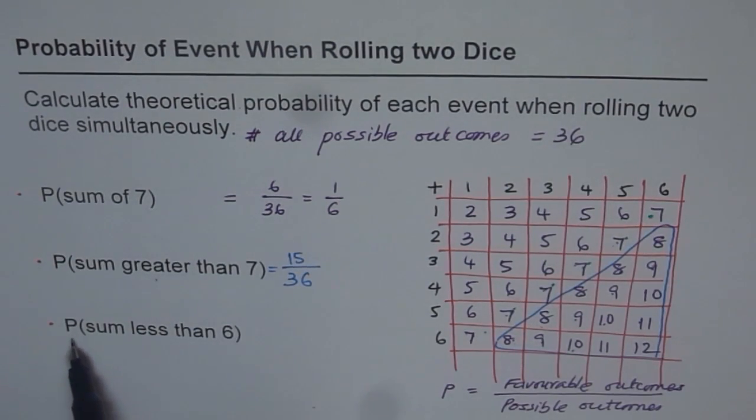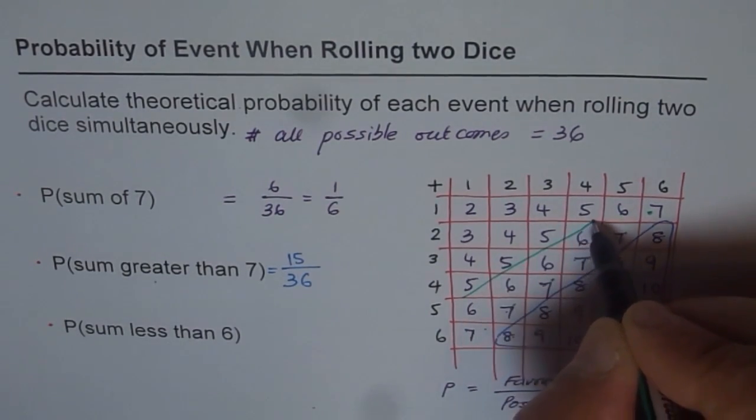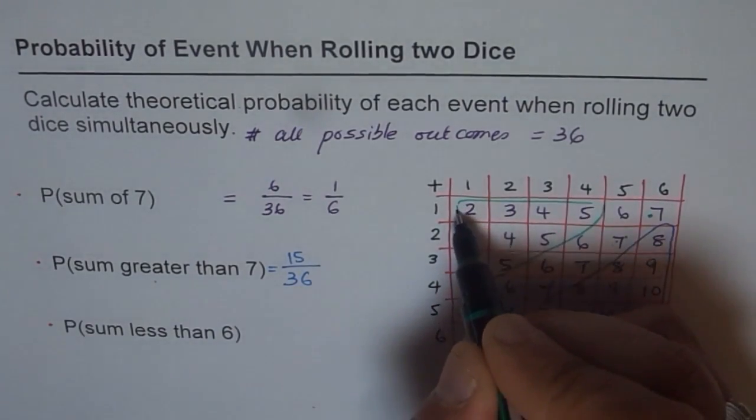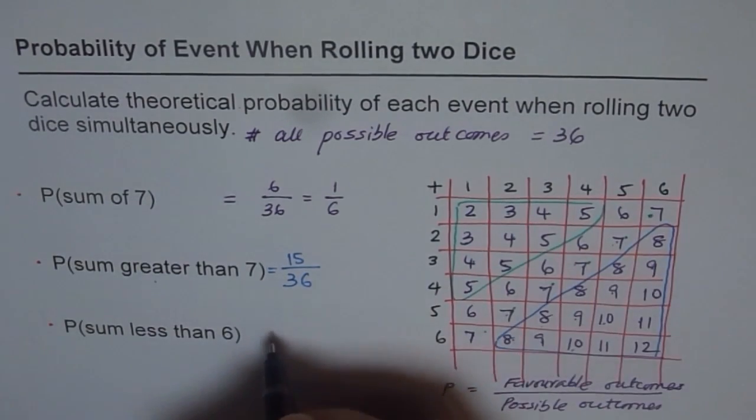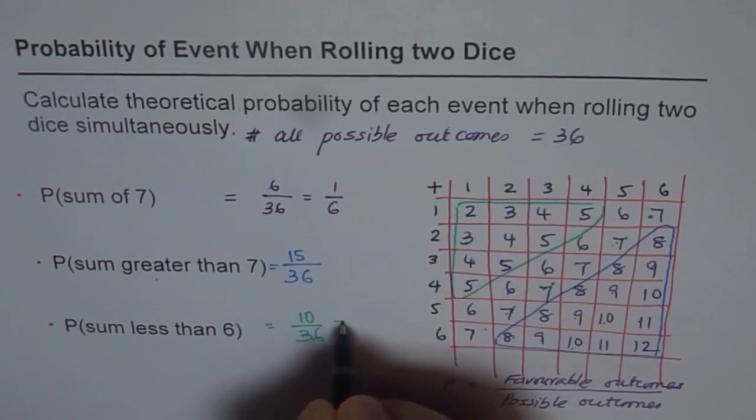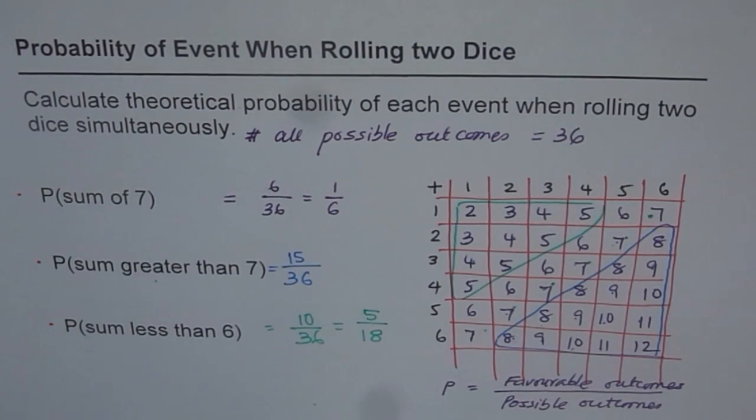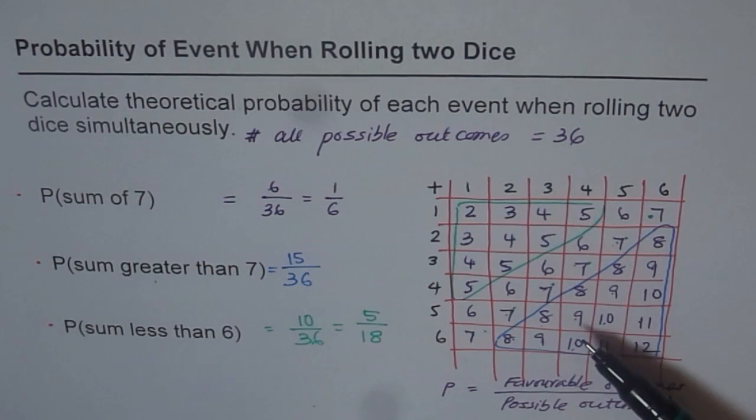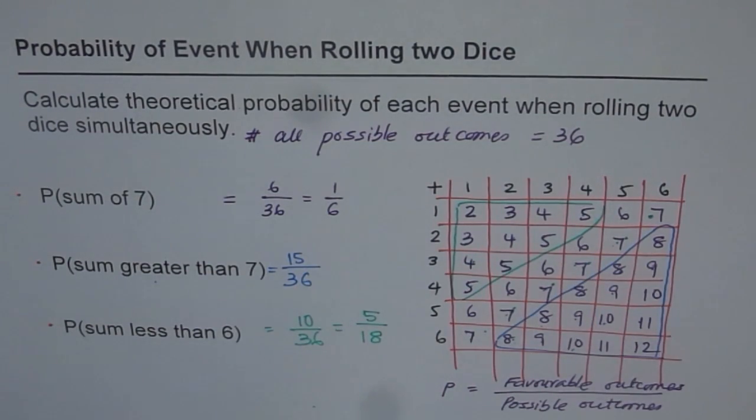The next one is probability when sum is less than six. Which are these numbers where the sum is less than six? That is five and lesser than five, this set of numbers. Let's count how many: one, two, three... ten. So we get 10 over 36, which you can simplify by dividing both by two, giving 5 over 18. You can see the maximum probability amongst these is for getting numbers more than seven.